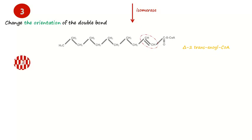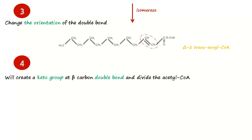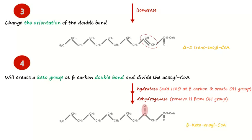Afterward, it will be needed to form a keto group at the beta-carbon position. The keto group is created from the hydratase enzyme and the dehydrogenase enzyme. The new substrate will be named beta-keto-enoyl-CoA.